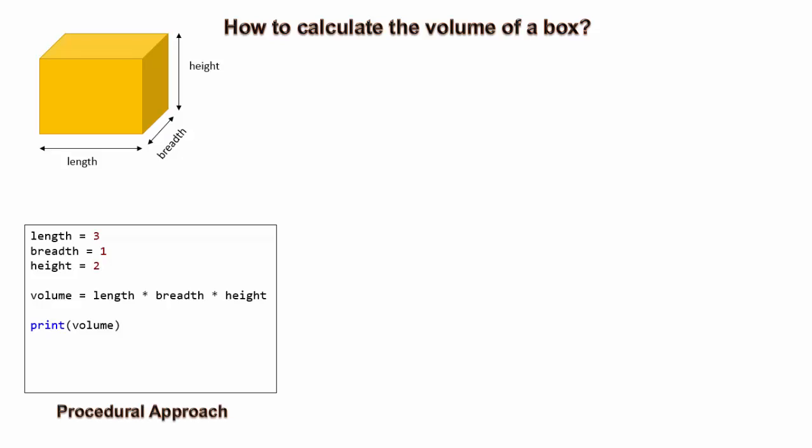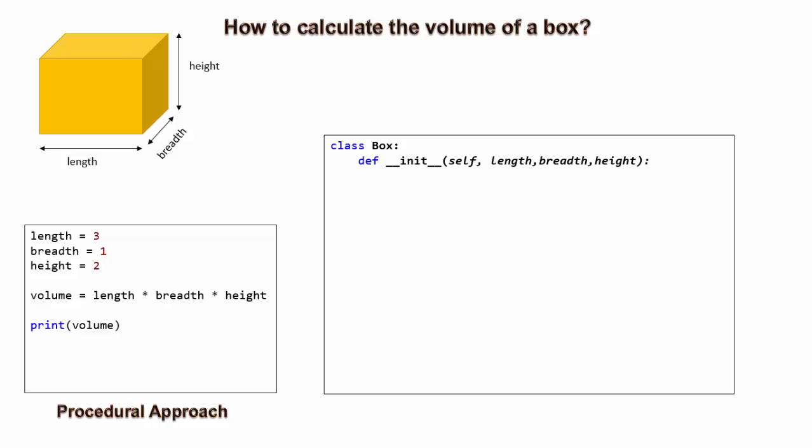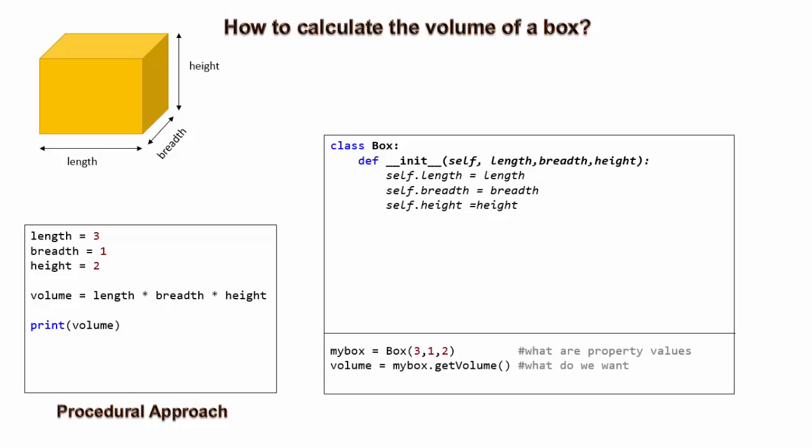That's right. We have box entity with length, breadth and height as properties. So, let us create a class out of it. There is no box without these properties. So, let us take input values from creator of the box to initialize the properties. Next, what do we want from this entity is its volume. The box has volume. Sounds like box has length or height, which means volume is a property of box.